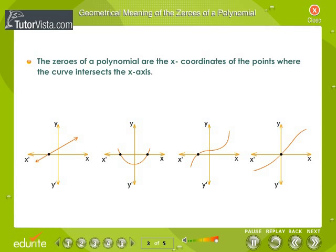Geometrical meaning of the zeros of a polynomial: The zeros of a polynomial are the x-coordinates of the points where the curve intersects the x-axis.